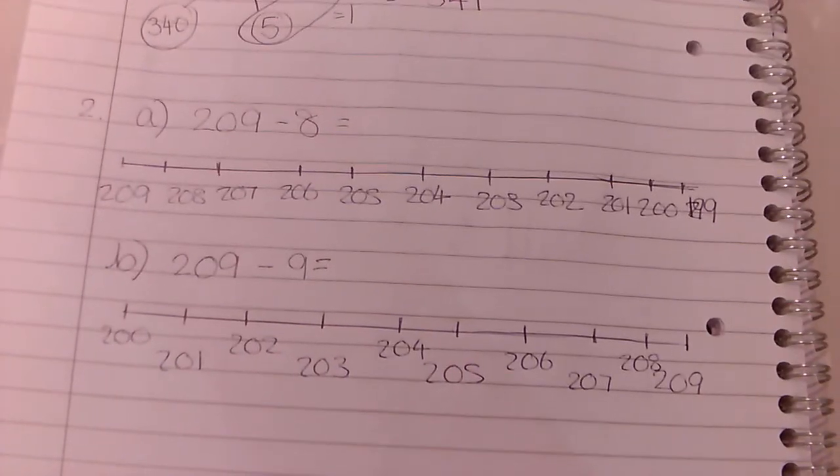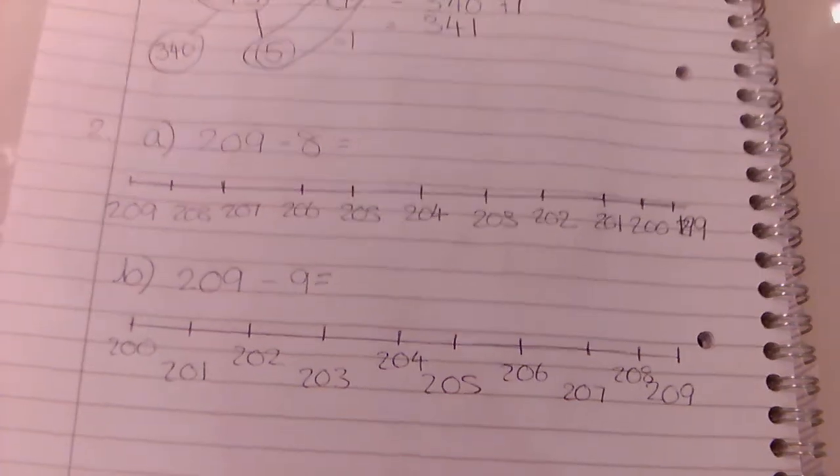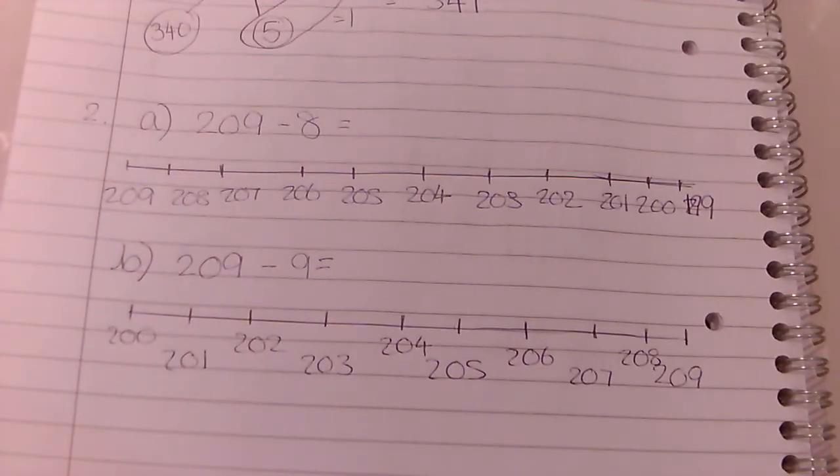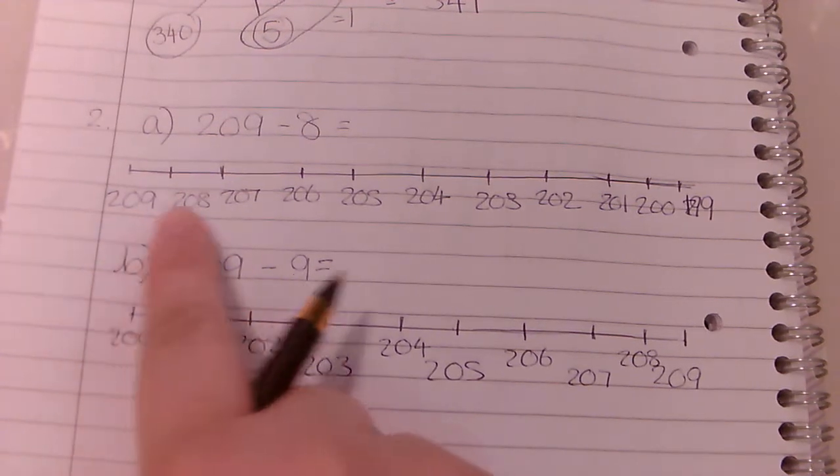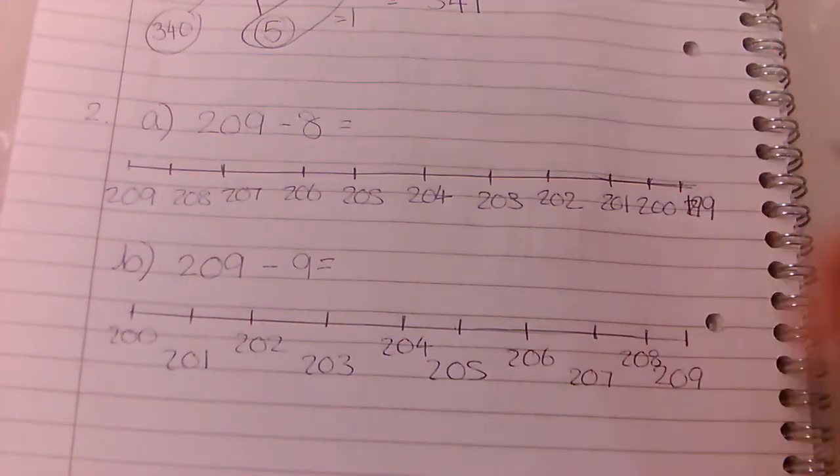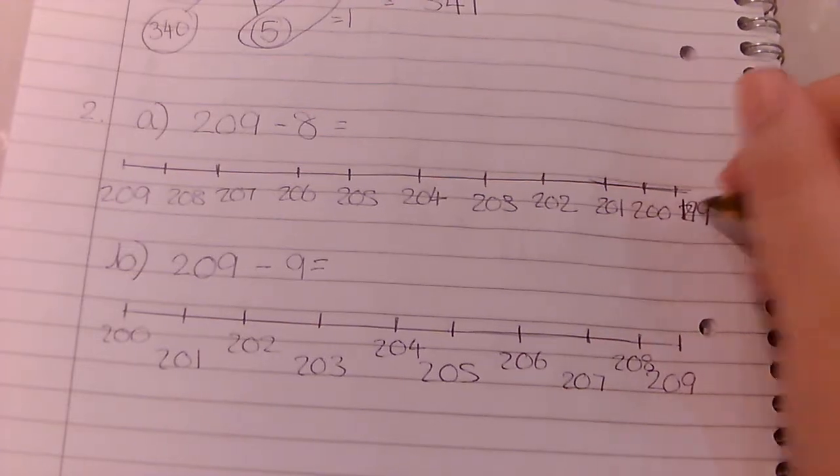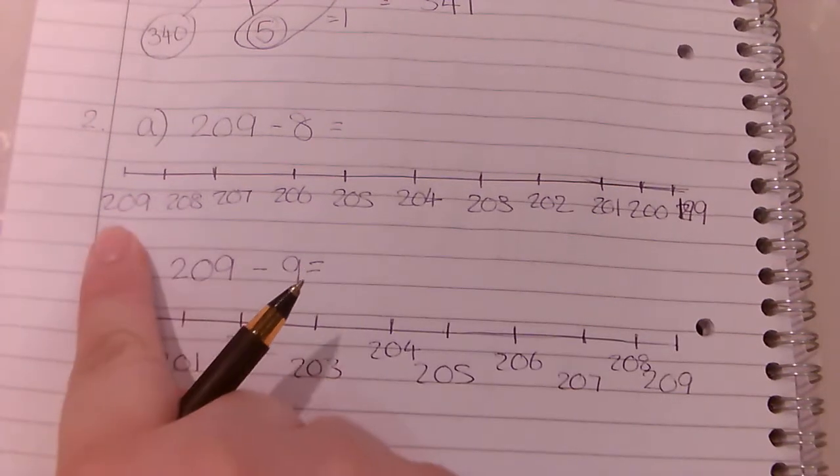Now for the next question I've done the number line two different ways just to show you that you need to keep an eye out. Sometimes they might try and trick you with which way around they show your number line. So our first number line starts on the left with 209 and goes all the way down to, made a little bit of mistake there but it's supposed to be 199.